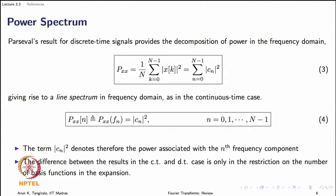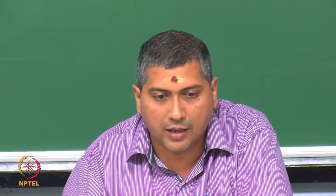Moving on to the power spectrum: the power spectral decomposition result has already been seen in the table. The main message is that mod c_n squared quantifies the contribution of the nth harmonic to the overall power of the signal, with n running from 0 to N minus 1. The difference between continuous time and discrete time results is only in the restriction on the number of frequencies; all other interpretations carry forward.